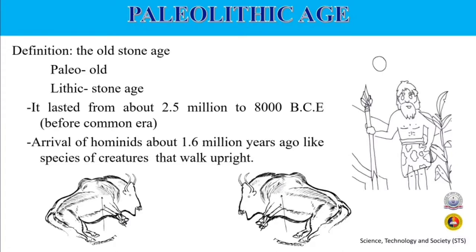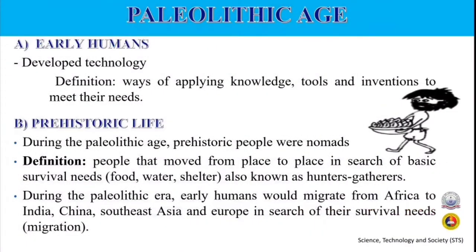The Paleolithic age lasted about 2.5 million to 8,000 BC. It saw the arrival of hominids about 1.6 million years ago — species of creatures that walk upright. Early humans developed technology: ways of applying knowledge, tools, and inventions to meet their needs. Early hominids developed into Homo sapiens, the species named for modern humans. About 40,000 years ago, a new group called Cro-Magnons appeared, developing more specialized tools and spoken language. Cave drawings depicting prehistoric life helped anthropologists learn more about this era.